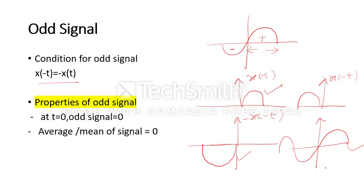The properties of odd signal are: first, at t equal to 0, the odd signal should be 0. Second, the average or mean value of the signal should be 0, because positive and negative values are present in equal amounts, so when we sum them up we get 0.